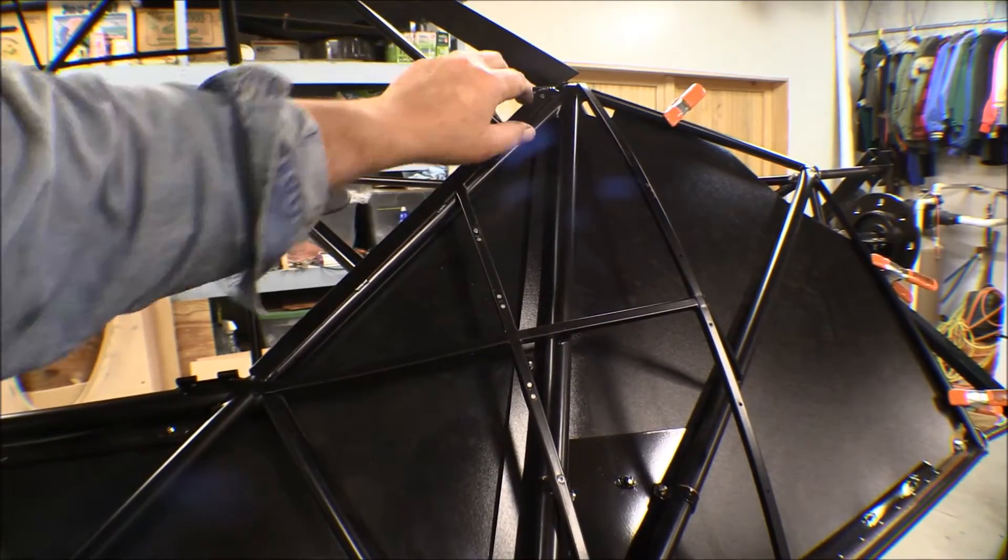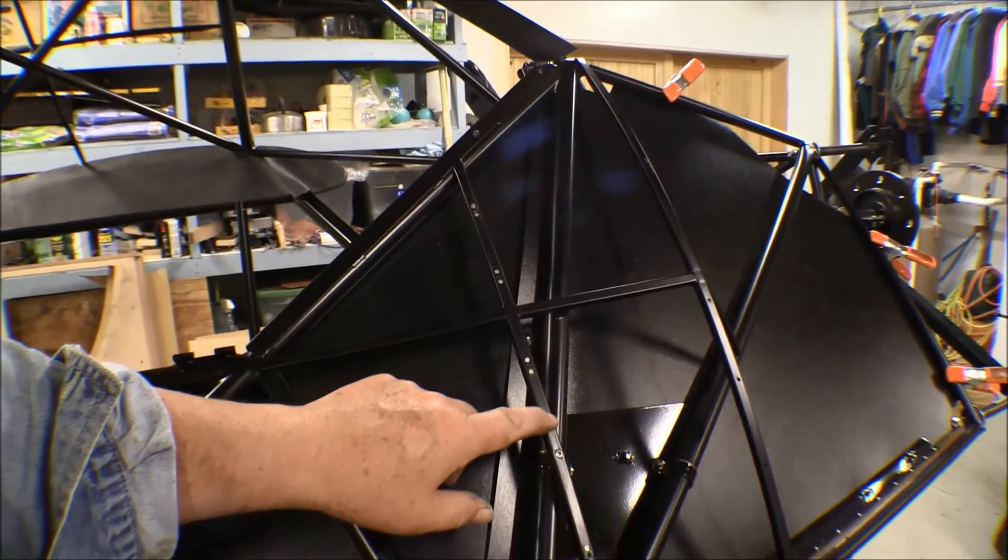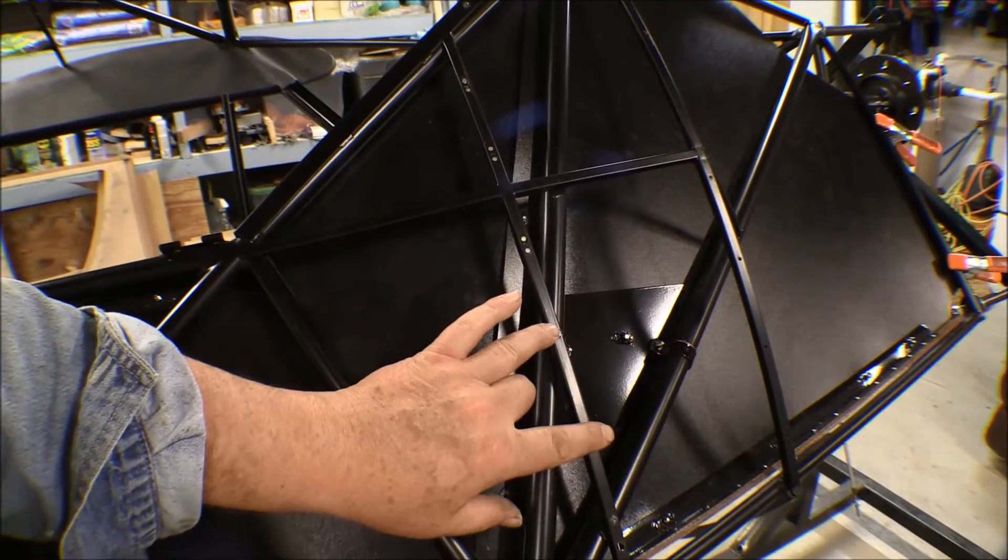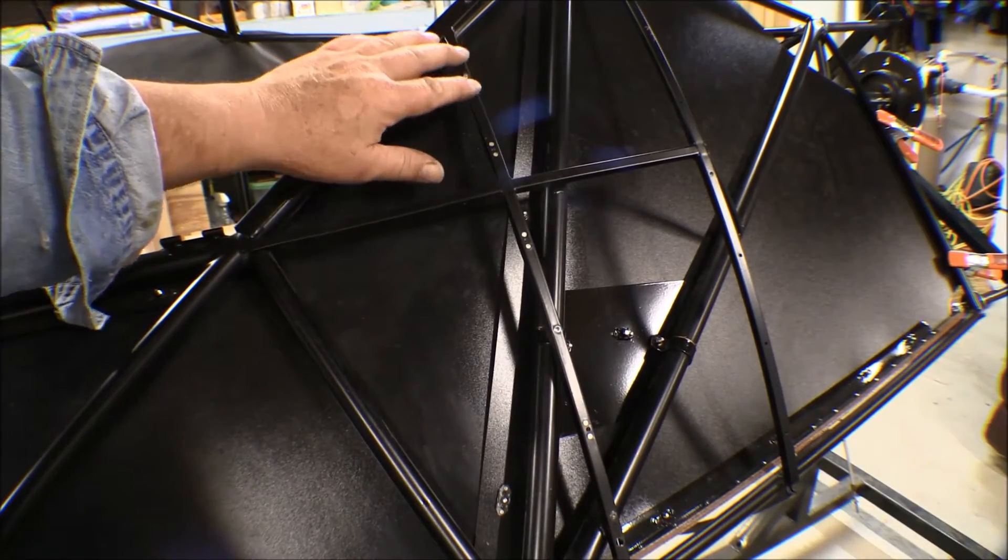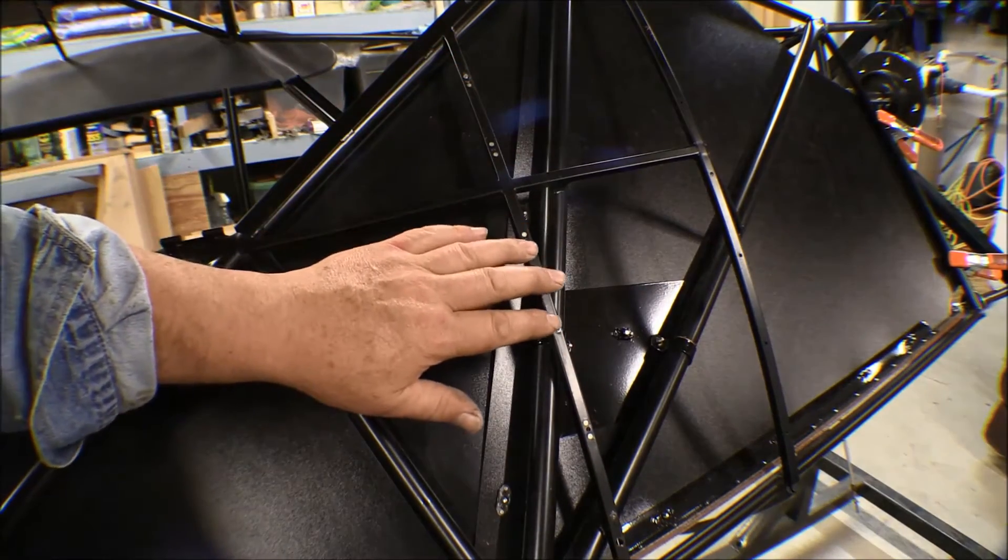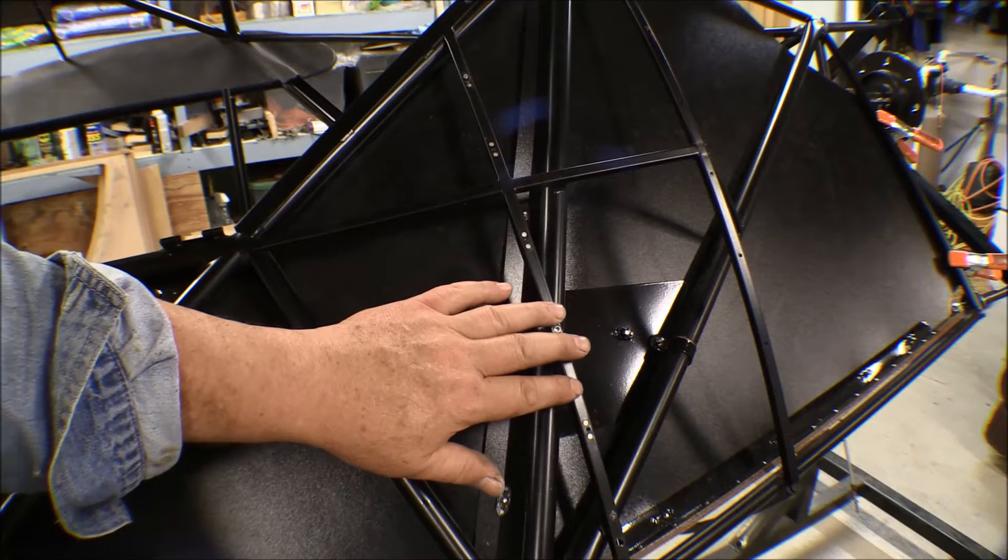What I did on these two and this one down here is I put nutserts in there. I'm putting in all number 4s on this portion of the cowling back here that extends past the boot cowl.